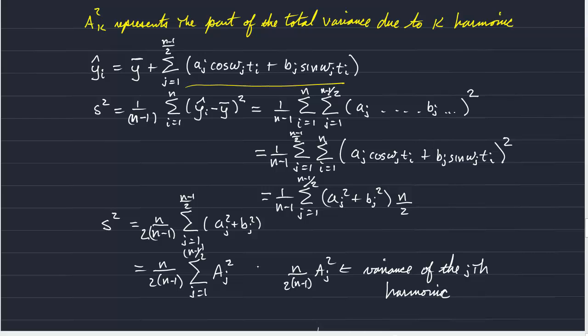And we can refer to that as s squared sub j, meaning the variance associated with the jth harmonic. And you'll notice that if n is appreciably large, then the variance of the jth harmonic is about equal to 1 half the total amplitude squared.